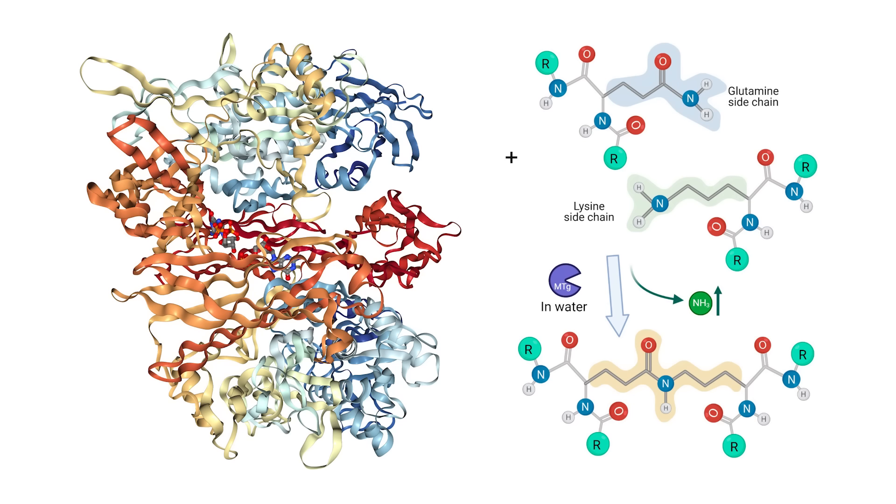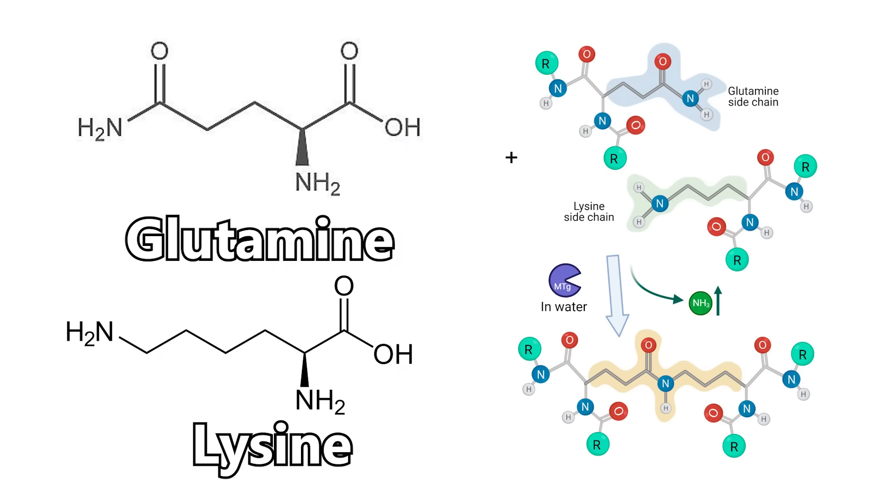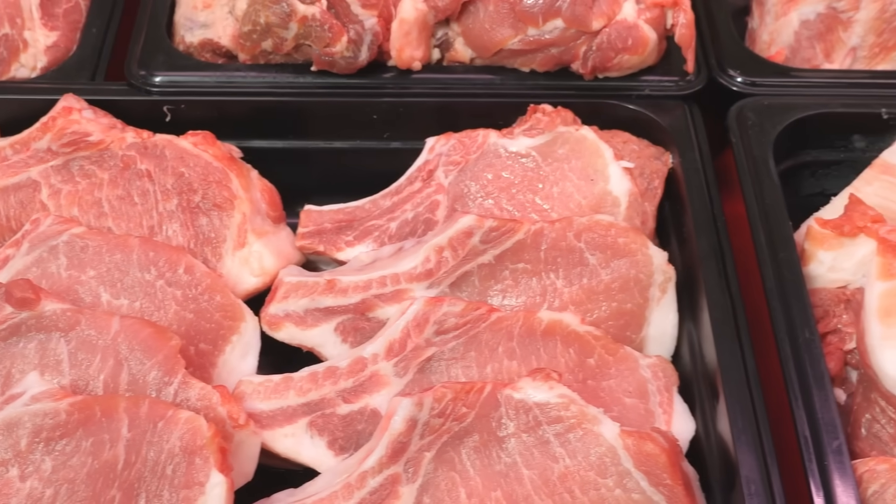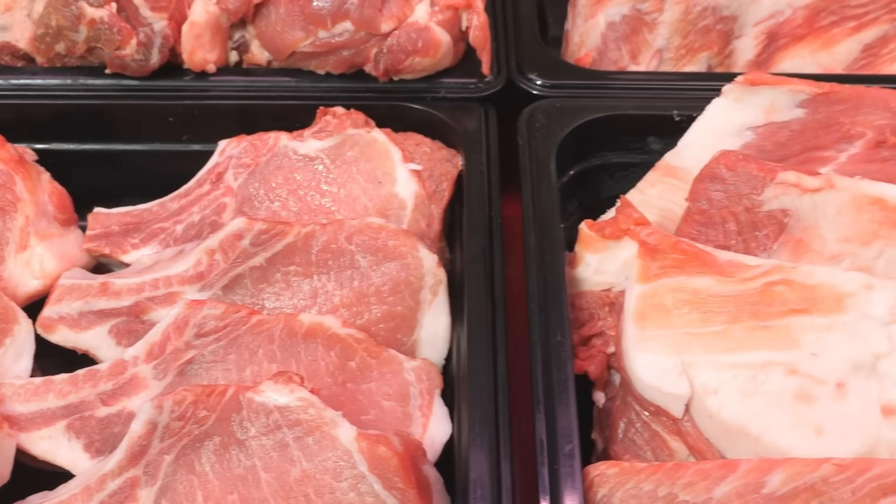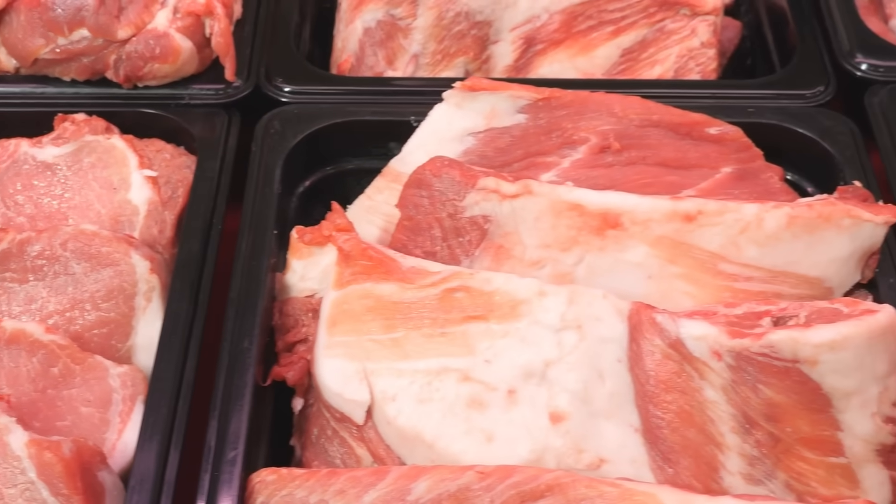Instead, what it does is catalyze the chemical bonding of proteins together. Specifically, any protein that contains the amino acids glutamine and lysine. If there's glutamine and lysine present, the enzyme just connects them together. And this doesn't just apply to meat, any protein source with these amino acids can be stuck together with this enzyme.